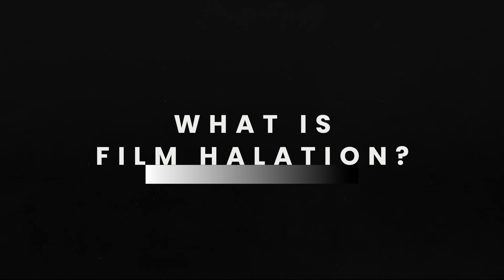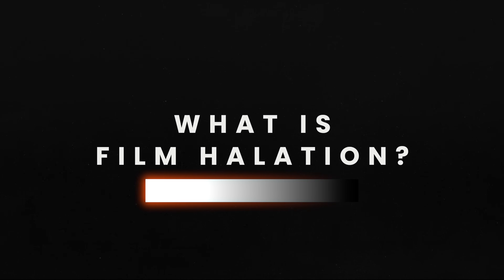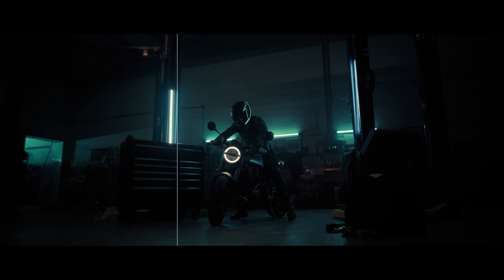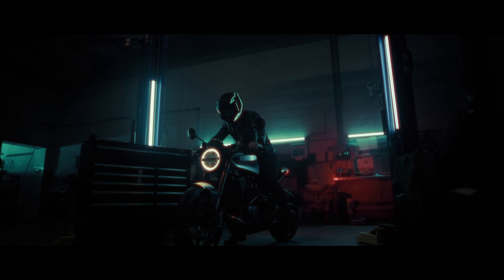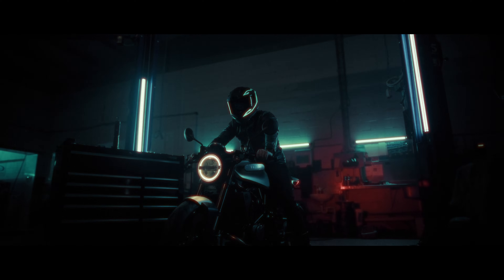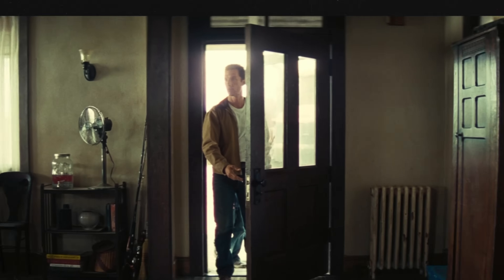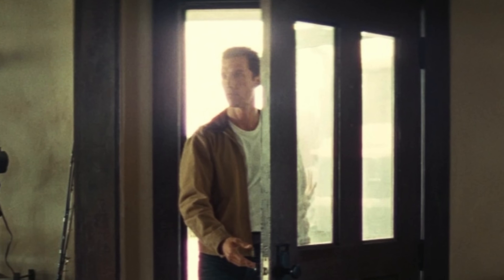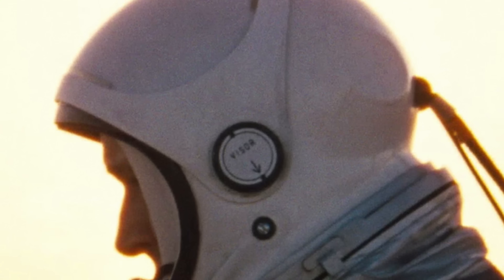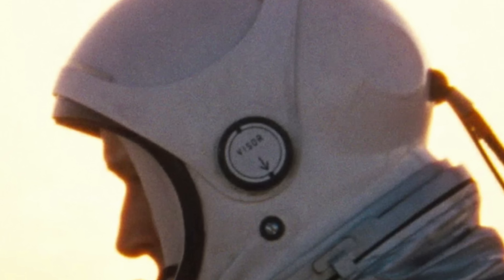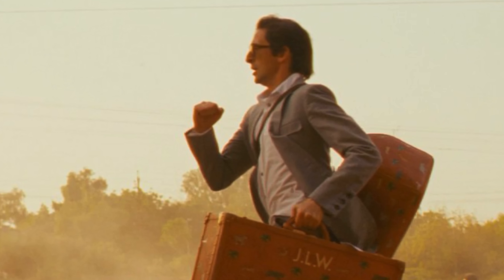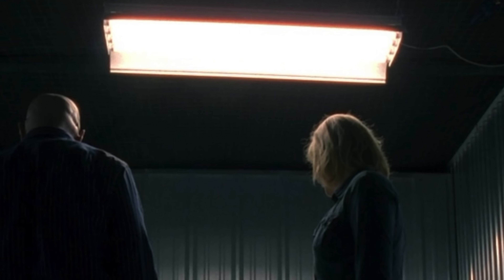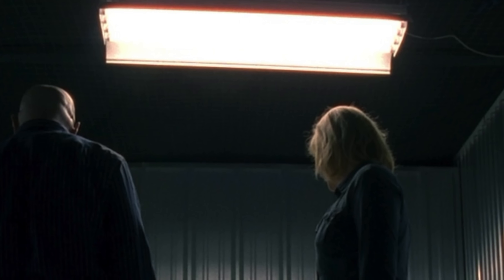What is film halation? Halation is an optical phenomenon found in traditional film stock. It occurs when light scatters inside the film emulsion and creates a glowing halo effect around bright highlights, particularly in high contrast scenes. In real film, halation often appears as a reddish glow around overexposed areas caused by the light reflecting off the film base. This natural imperfection is something that many filmmakers and cinematographers seek to replicate digitally to evoke the look and feel of analog film.